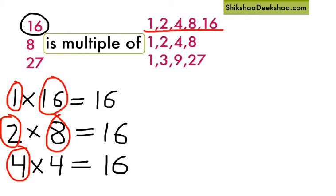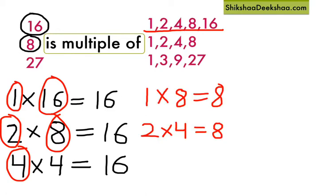We can obtain 8 by multiplying these numbers. There are no other numbers that can be multiplied together to get 8. So we say 8 is the multiple of 1, 2, 4 and 8.